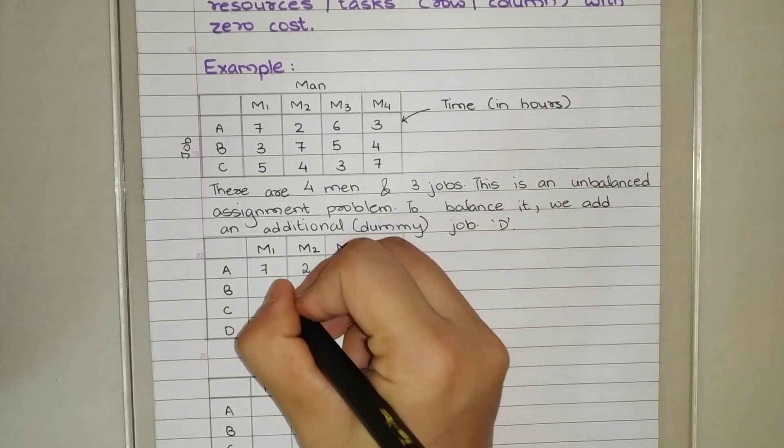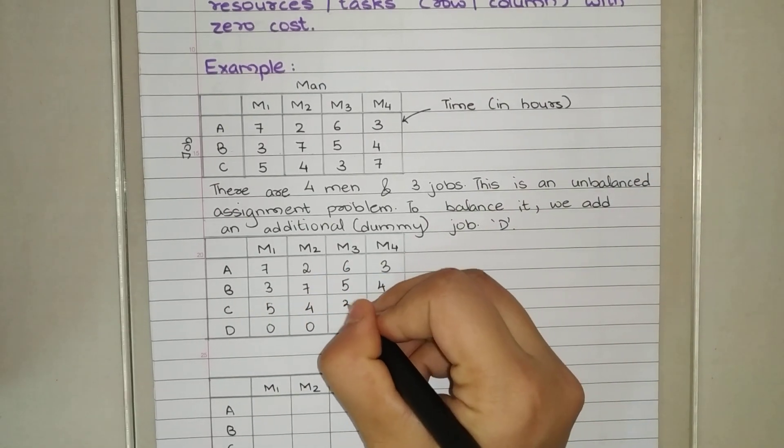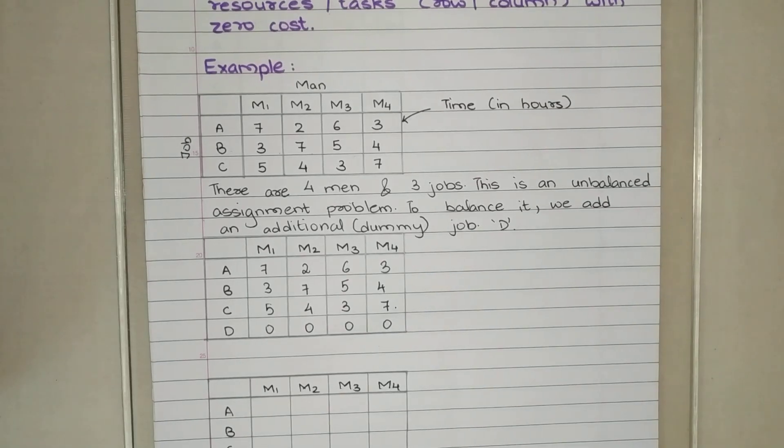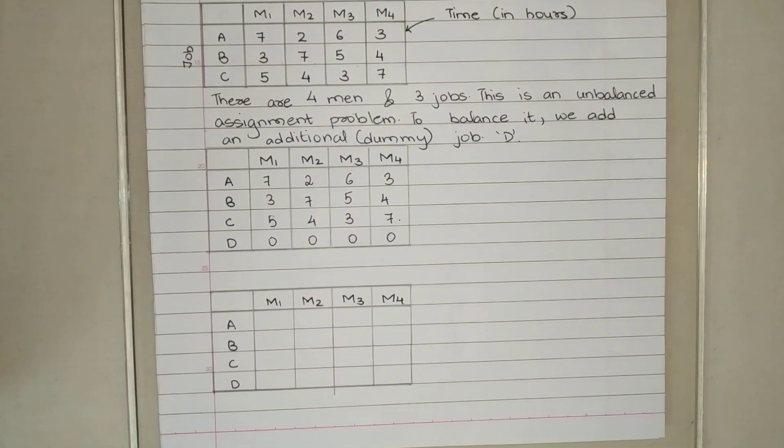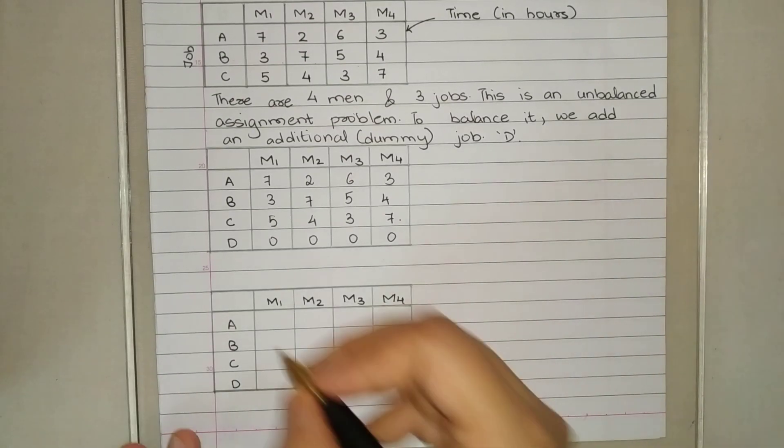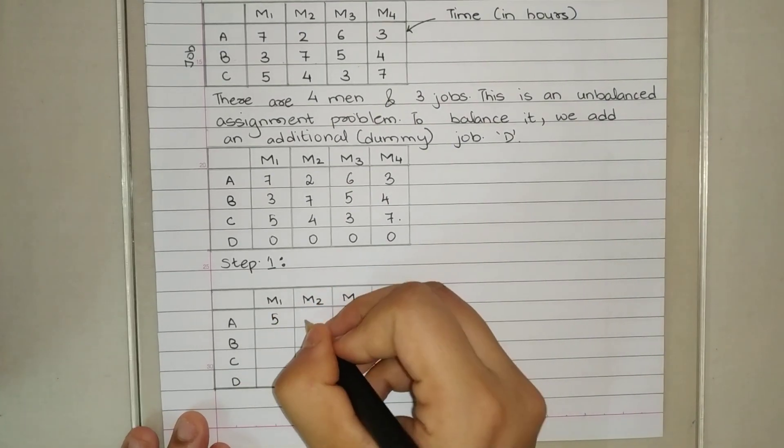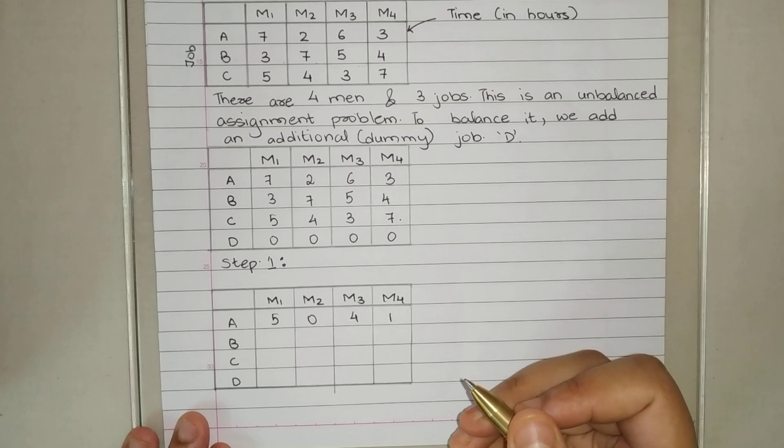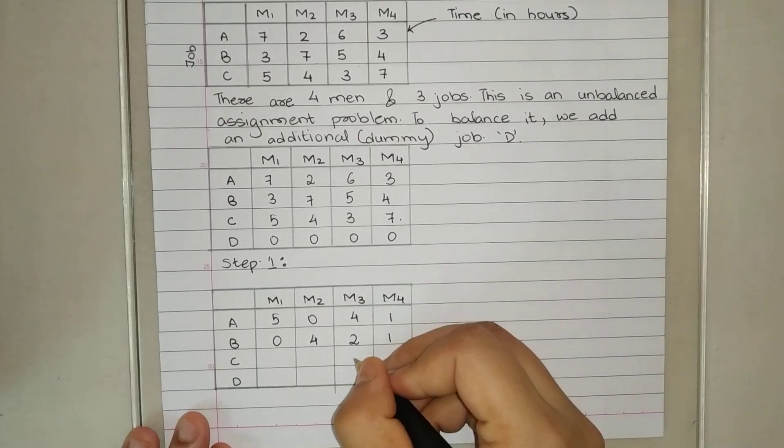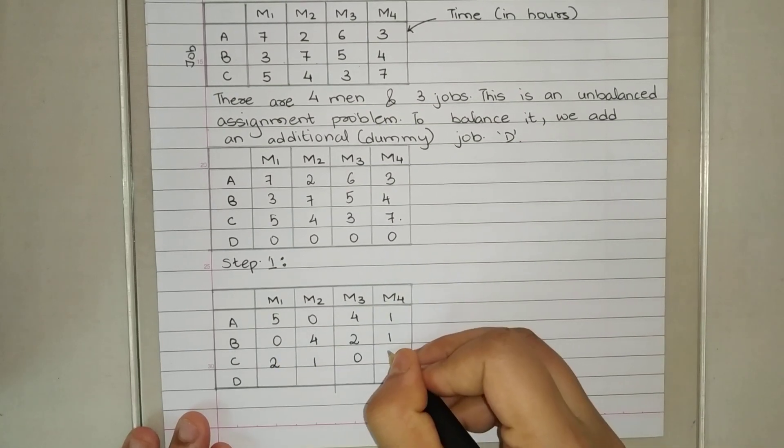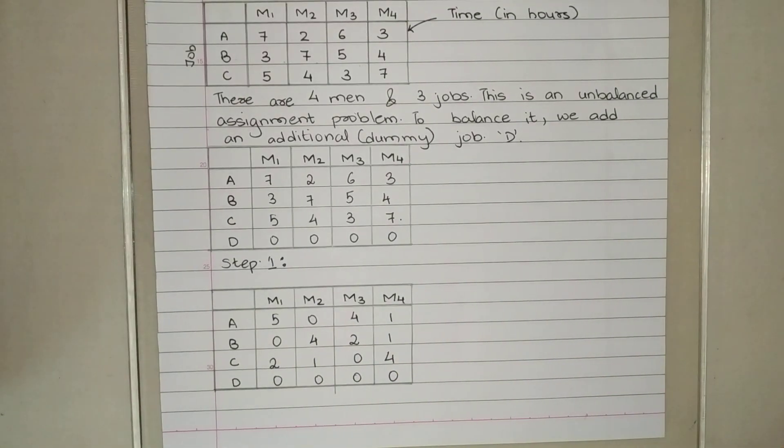Everything else is the same. Let me write everything else now. Seven, two, six, three. Now what to do? Same method as we solved before. First, what is step one? Subtract the minimum of each row from the respective elements of that row. In the first row minimum is two, so this becomes five, zero, four, one. Next, minimum is three, so zero, four, two, one. Next minimum is three, so one, zero, two, four. And last, everything is already zero.